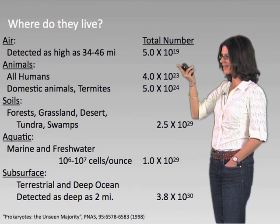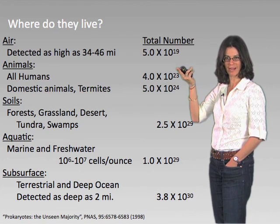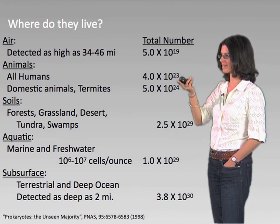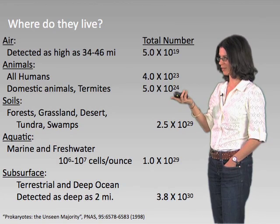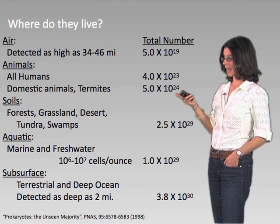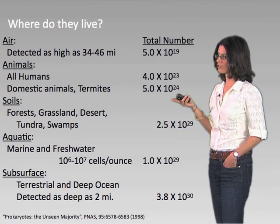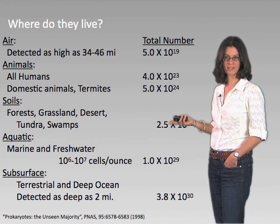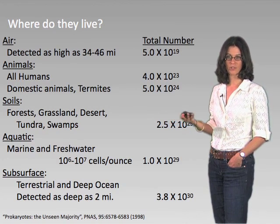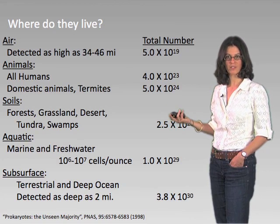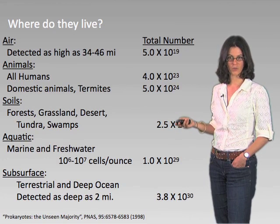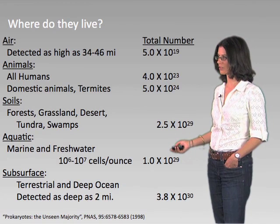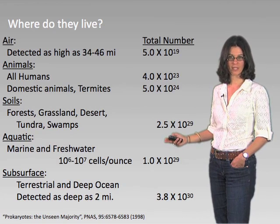Let's start where microbes are least abundant: up in the air. It's quite amazing that they have been detected as high as 34 to 46 miles up into the sky, but these concentrations are really small relative to other compartments. Within the human body, and adding up all humans, domestic animals, and termites, the order of magnitude jumps up to about 10 to the 23rd to 24th. This is superseded by quantities found in soils — forests, grasslands, desert, tundra, and swamp environments — where microbial activities can transform the chemistry of their environment quite profoundly. This is also true in aquatic domains, where at similar orders of magnitude we find microorganisms in both marine and freshwater environments.